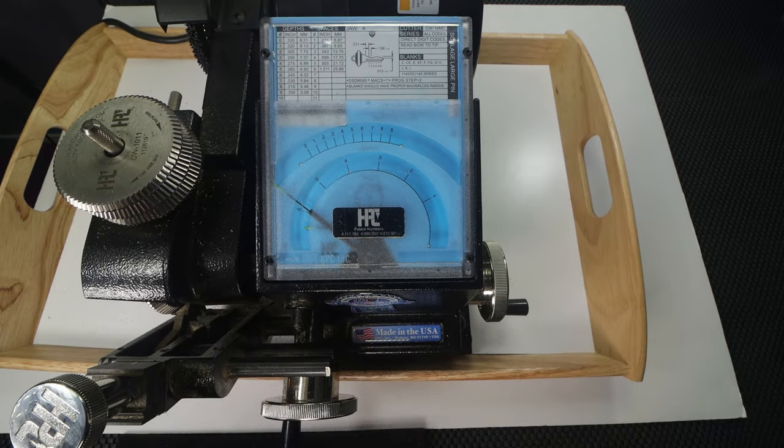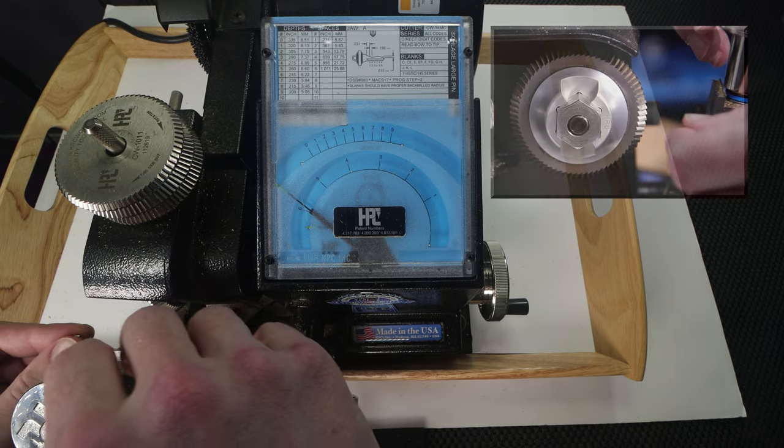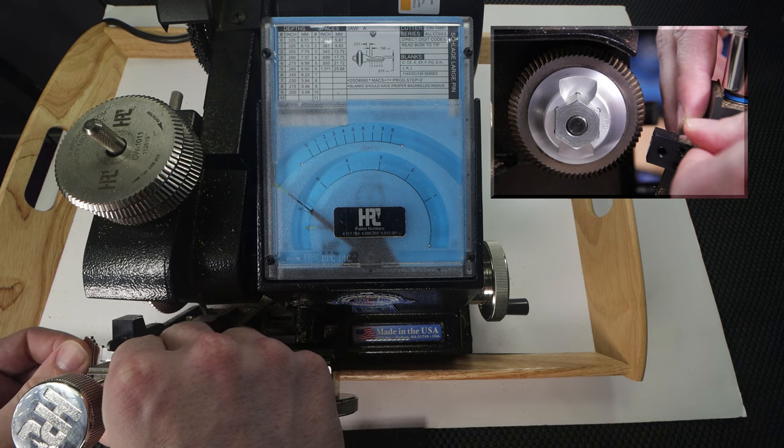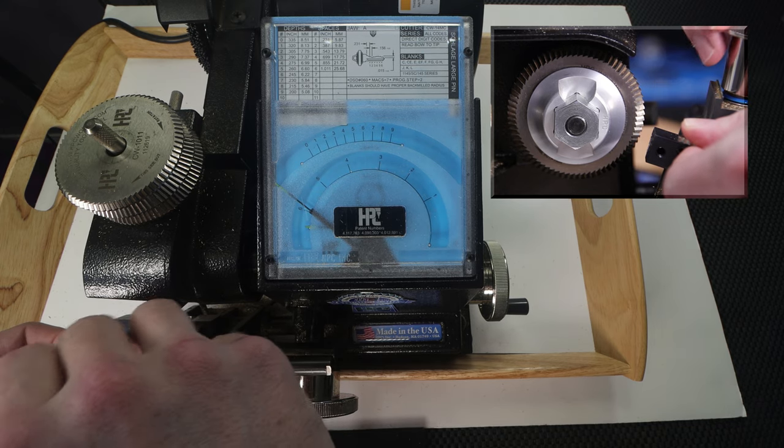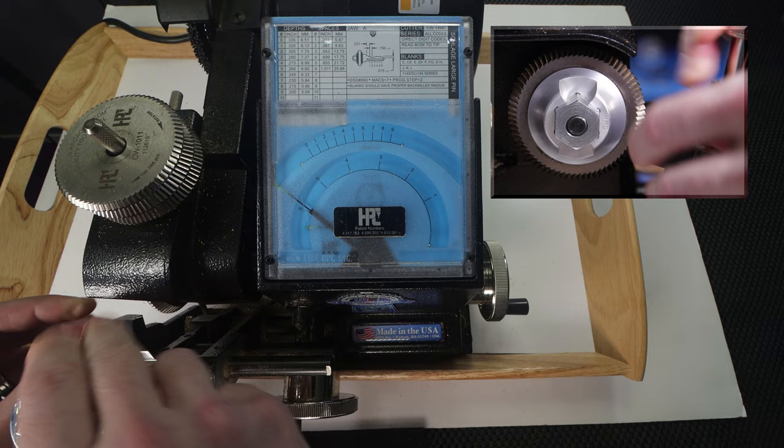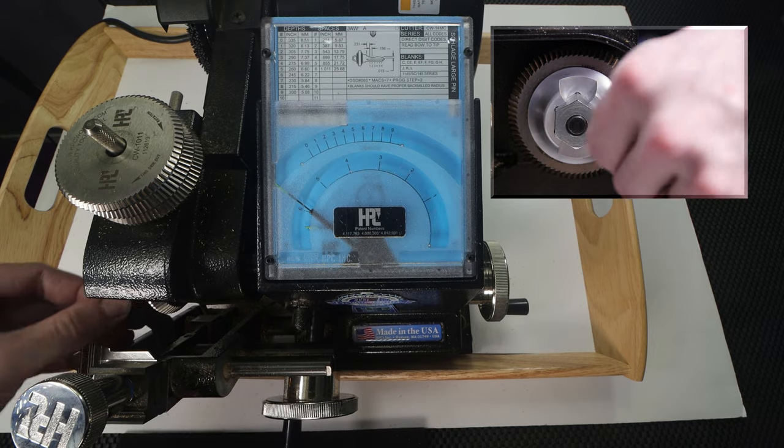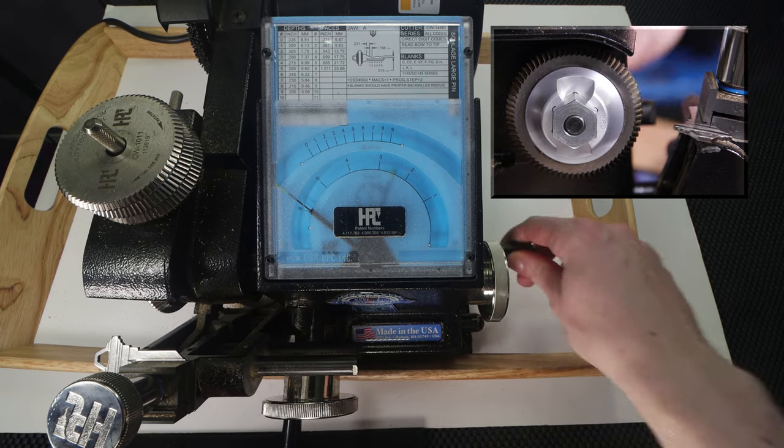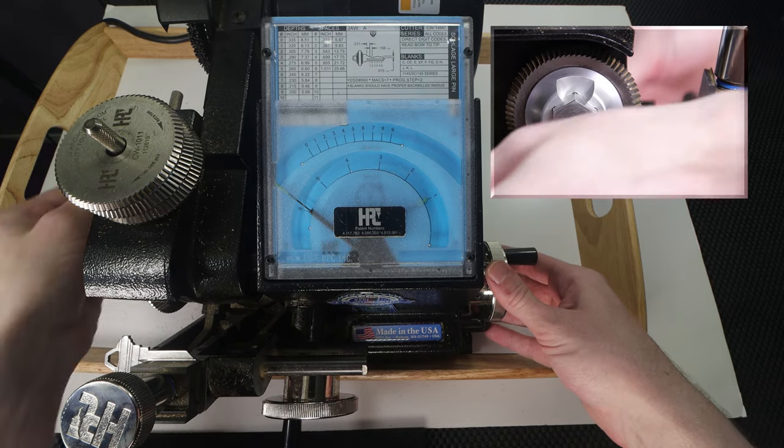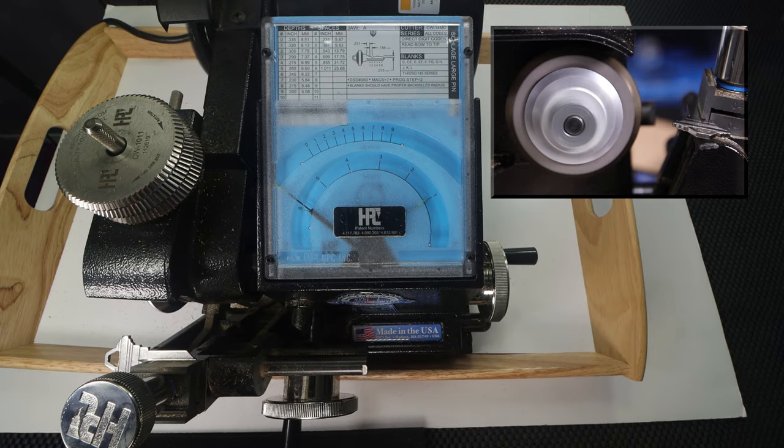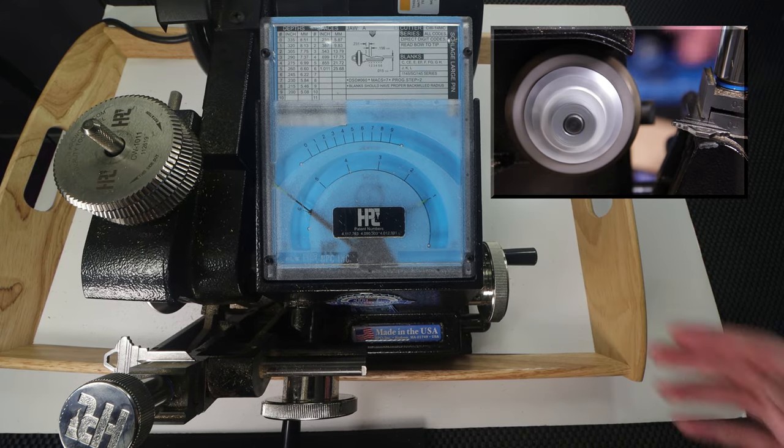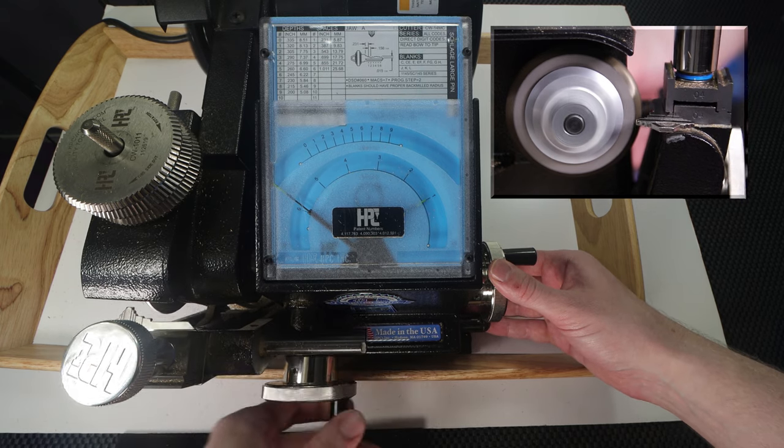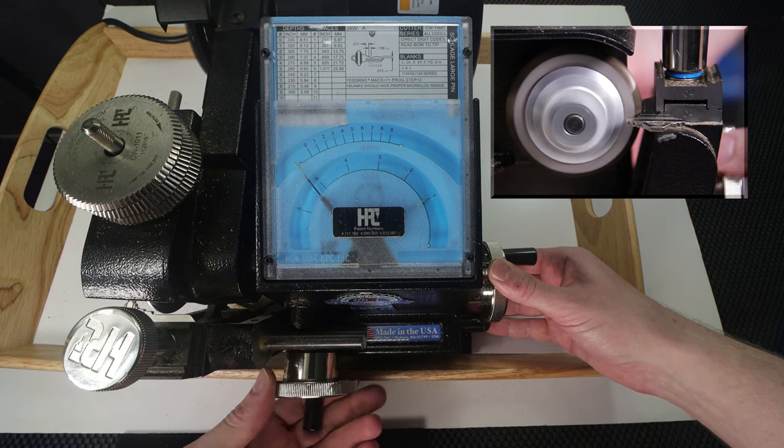So the first thing we're going to need to do is we're going to insert our key blank right into the jaw. Then we're going to get our shoulder gauge and we're going to lift that up. This shoulder gauge is going to make it so that our spacing is going to be correct and then once we do that we're going to put it right back down. Now we're going to move our machine over to position 1 and then we're going to turn it on. So once our machine is on what we're going to do is we're going to cut all the way down to 9 on the first position and then we're going to repeat.